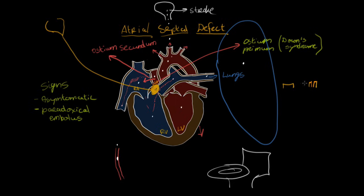So that's pretty much what you get with an atrial septal defect. It is usually ostium secundum. It can be ostium primum, especially in individuals with Down syndrome. Usually asymptomatic, sometimes resulting in a paradoxical embolus which can potentially lead to a stroke. And when you listen to the sounds of the heart with a stethoscope, you get this split S2.